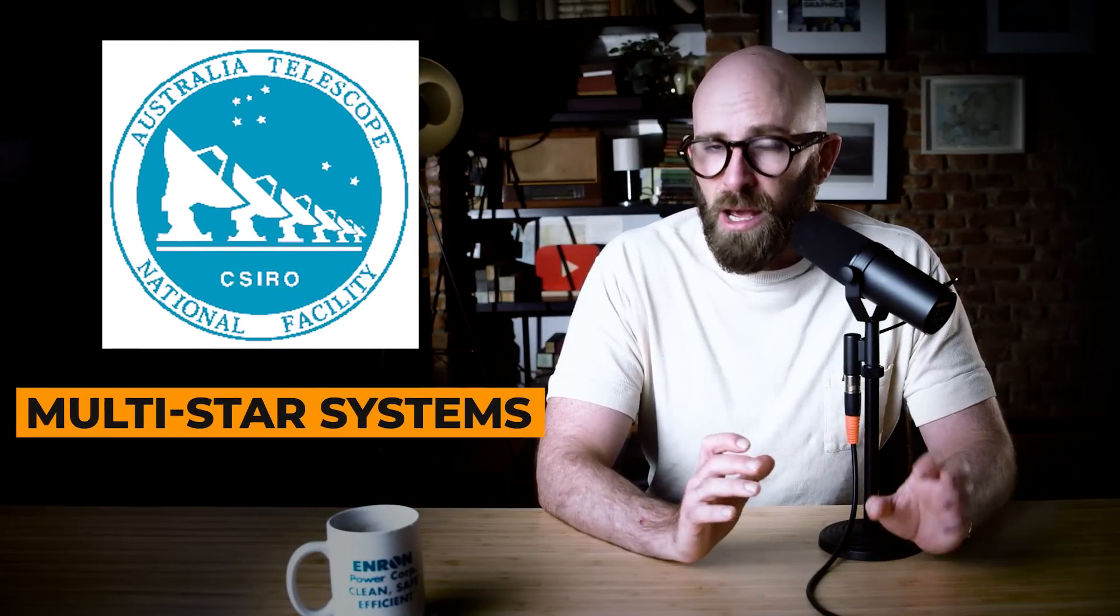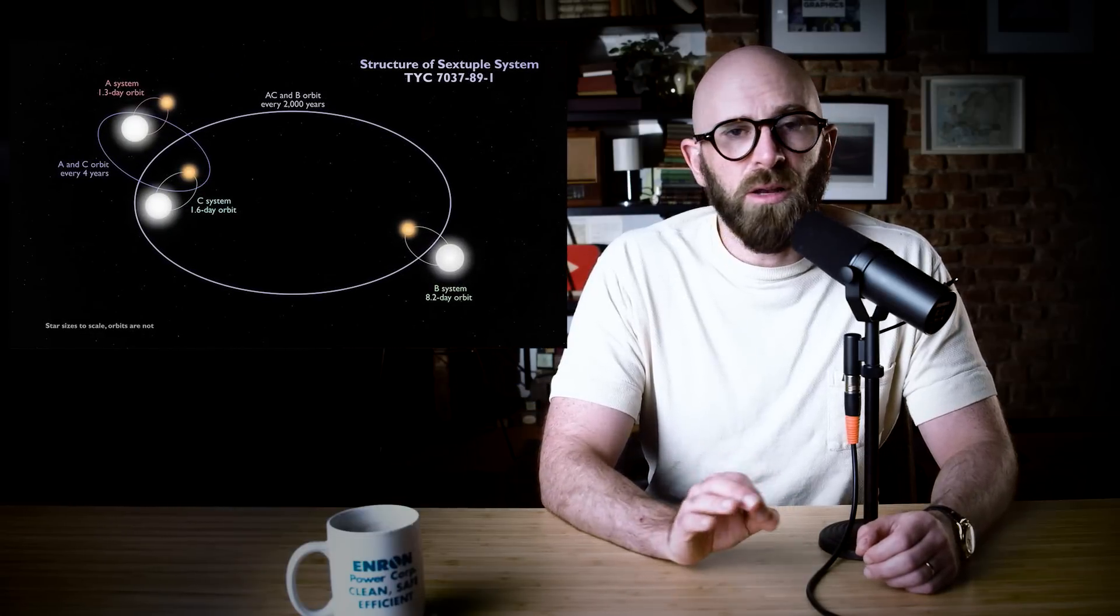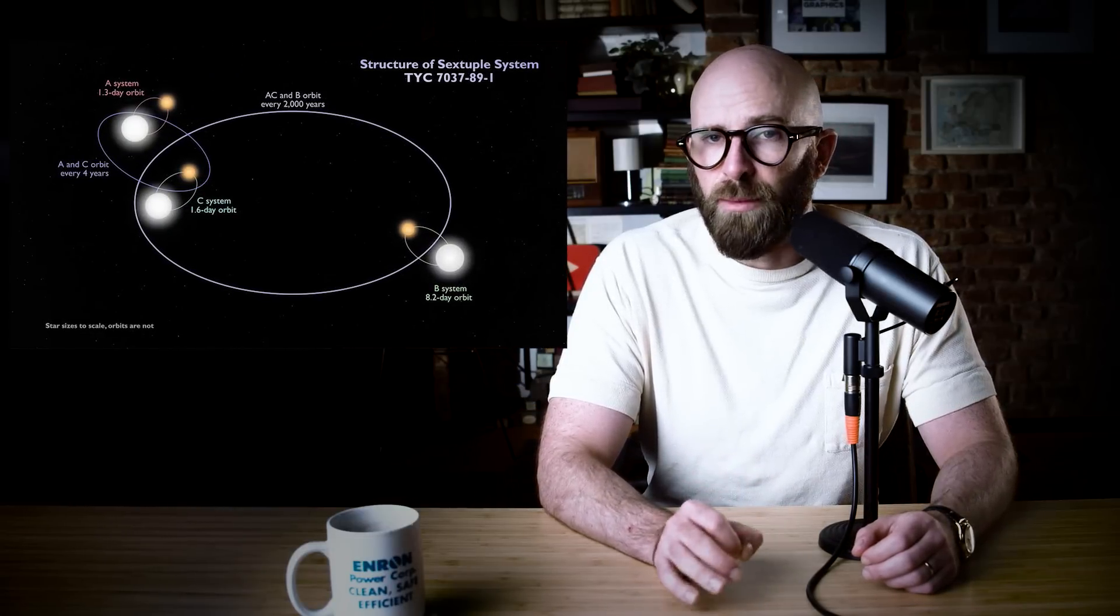The fact that our sun is not in a binary star system is actually about the most unusual thing about it, except of course the lifeforms on its funny little third planet. According to the Australia Telescope National Facility, some 85% of all stars exist in what are called multi-star systems. Most commonly, those stars are part of a binary system, one where two stars are locked together in a mutual orbit around a common center of gravity.